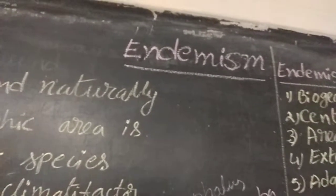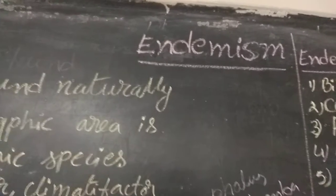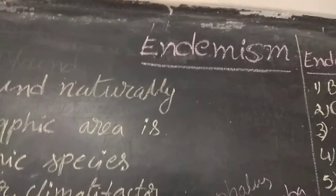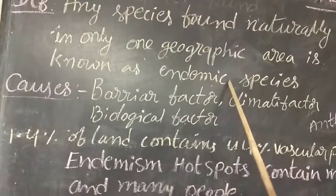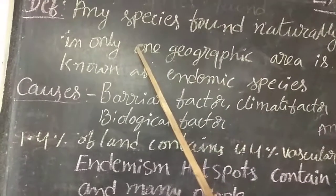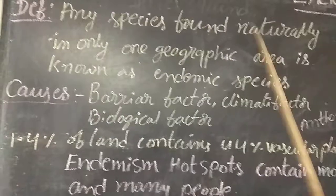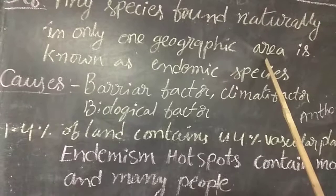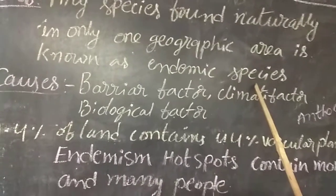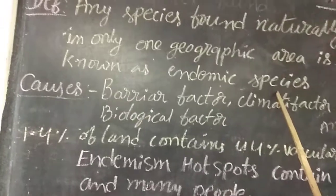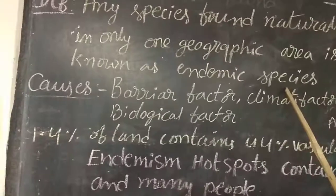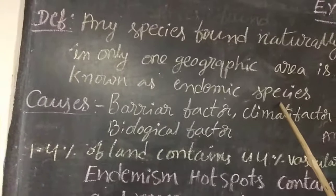Today, we will discuss about endemism. Endemism is the concept first proposed by A.P.D. Kanderle. The definition of endemism is: any species found naturally in only one geographic area is known as endemic species. Endemism is a phenomenon where any plant or family is found in that particular geographic area and not elsewhere in the world.